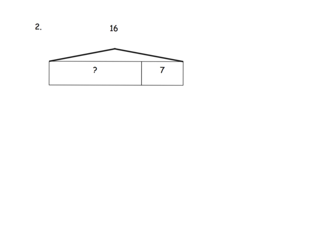One more example. This one, a little bit trickier. We have a total, 16. We have one of the parts, 7, but we don't have this part. So we get to write anything we want. We could say there are 16 players on the team.